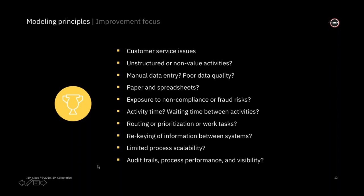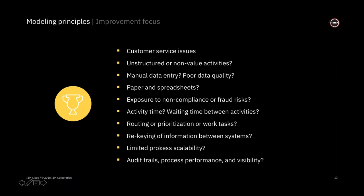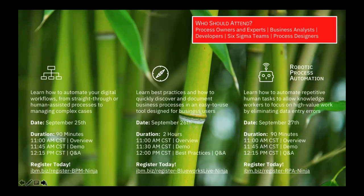What are the improvement focuses you can take out of a process? If it's a customer service issue or there are activities that don't add value, you can take those out. Maybe it's manual data entry, paper, and spreadsheets. My biggest one is the re-keying of information between systems — where individuals get something in an email or one application and have to copy or re-key it into a different application. These are the sorts of things I would recommend you eliminate from your processes.